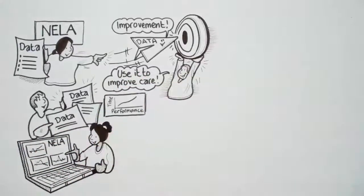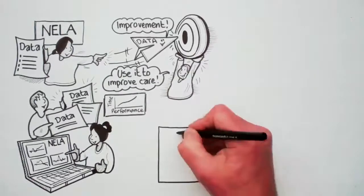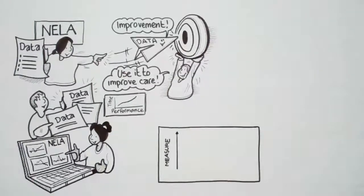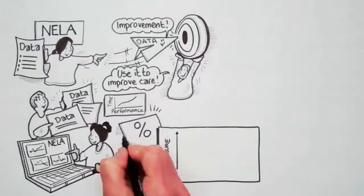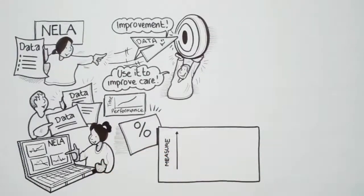A run chart is very simple. On the vertical axis we have our measure, for example percentage of patients going to critical care or time taken to get to theaters, and on the horizontal axis we have the date. It's simply the data presented in chronological order, a time sequence.